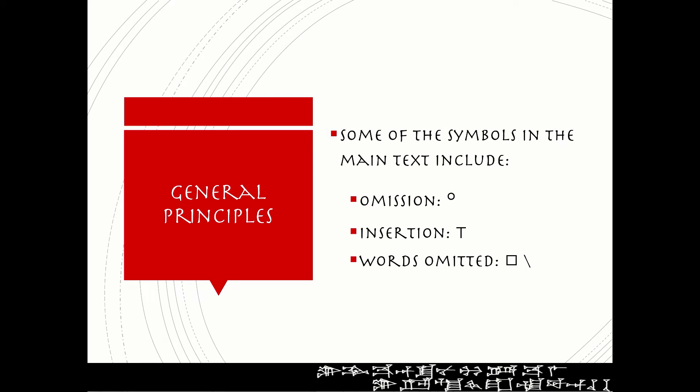Some of the symbols in the main text include a zero for an omission. That little t-looking symbol indicates an insertion. If they want to indicate that more than one word is omitted they will put a box at the beginning of a series of words and then an angled slash at the end. Of course there are other symbols but these are some of the common ones.